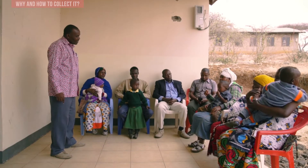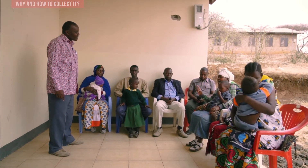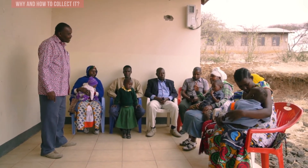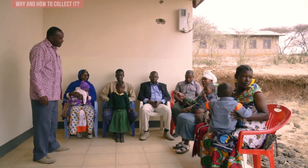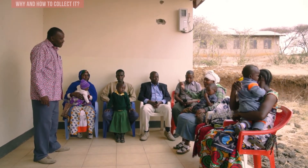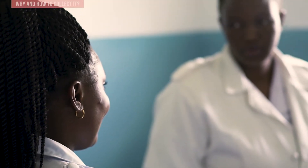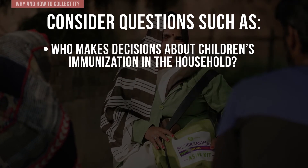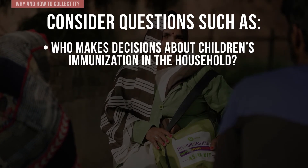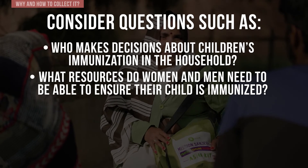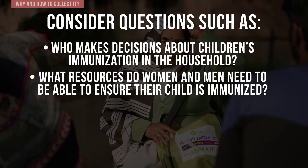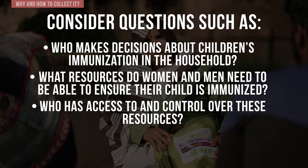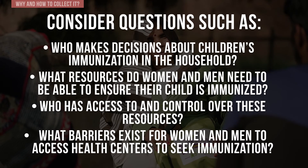When gathering information, include both women and men with diverse backgrounds such as different economic status, ethnic group, age, ability and home location. Healthcare staff and volunteers who live in the community often also have important insights. Consider questions such as: who makes decisions about children's immunisation in the household? What resources do women and men need to be able to ensure their child is immunised, and who has access to and control over these resources? What barriers exist for women and men to access health centres to seek immunisation?